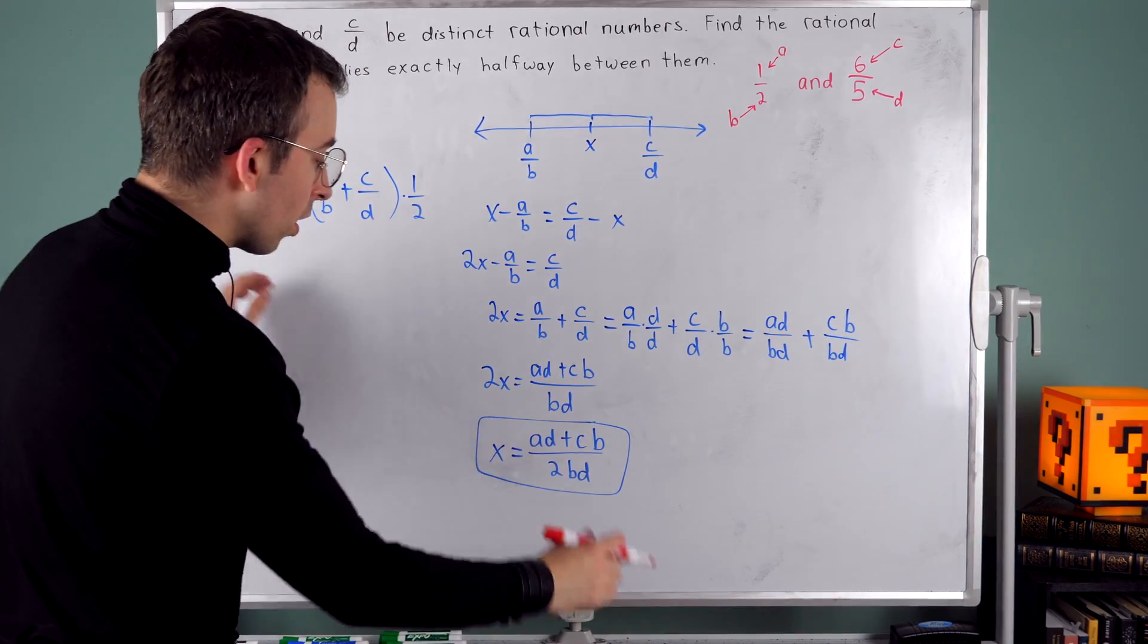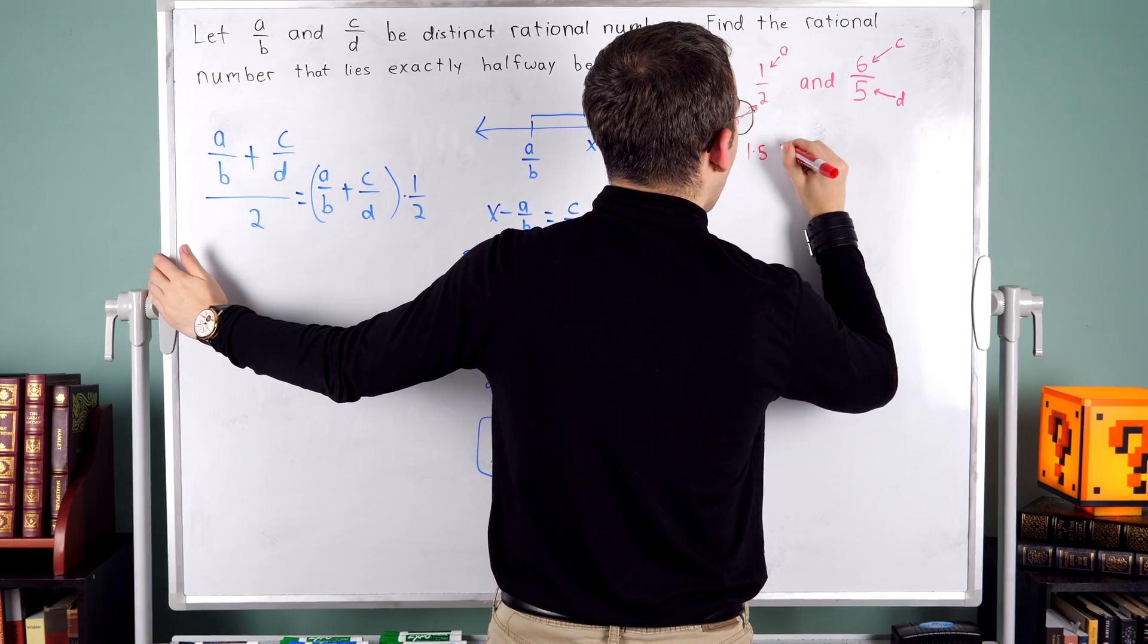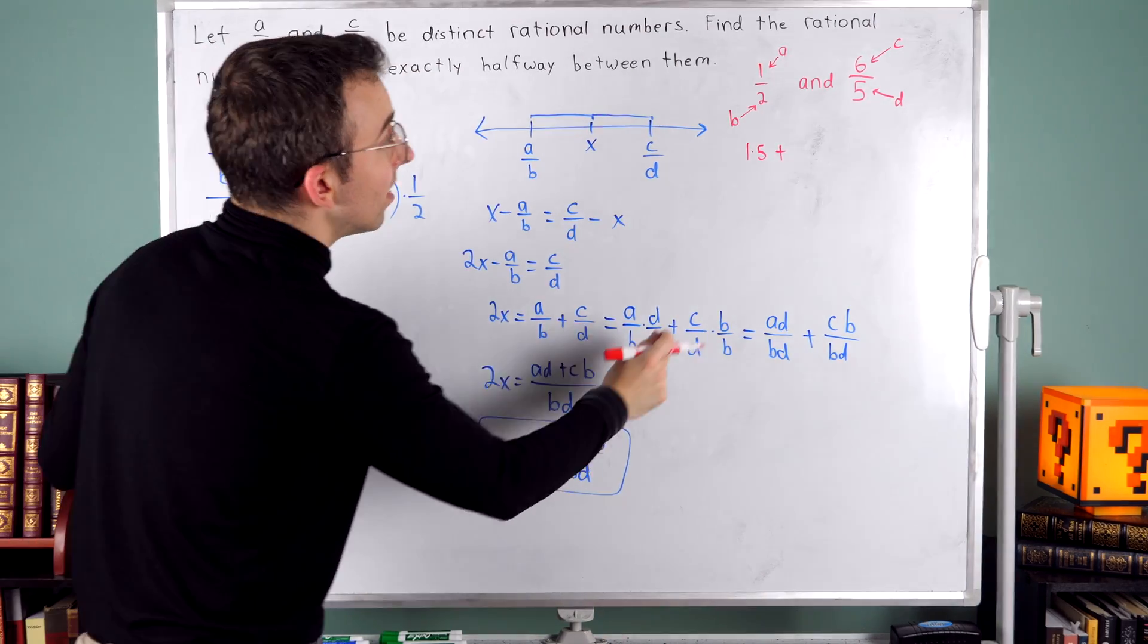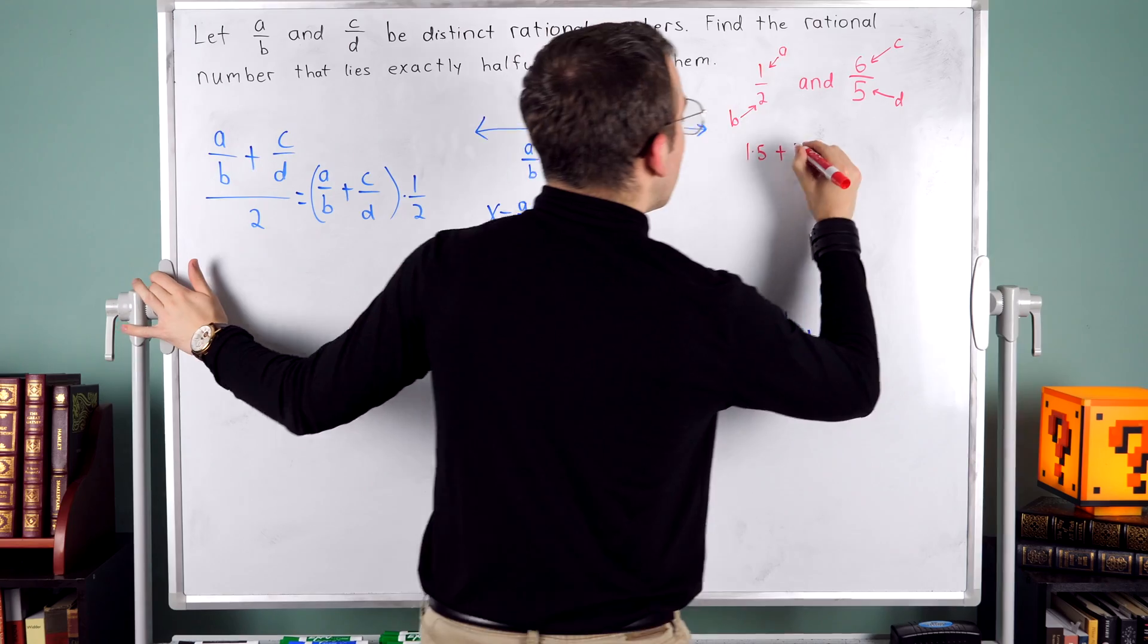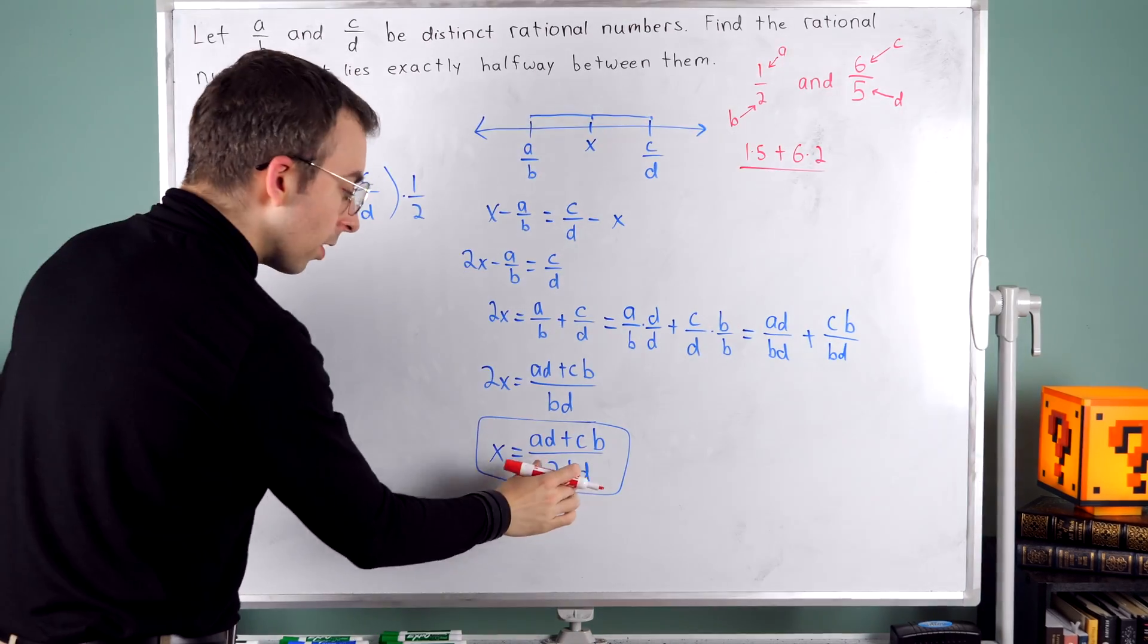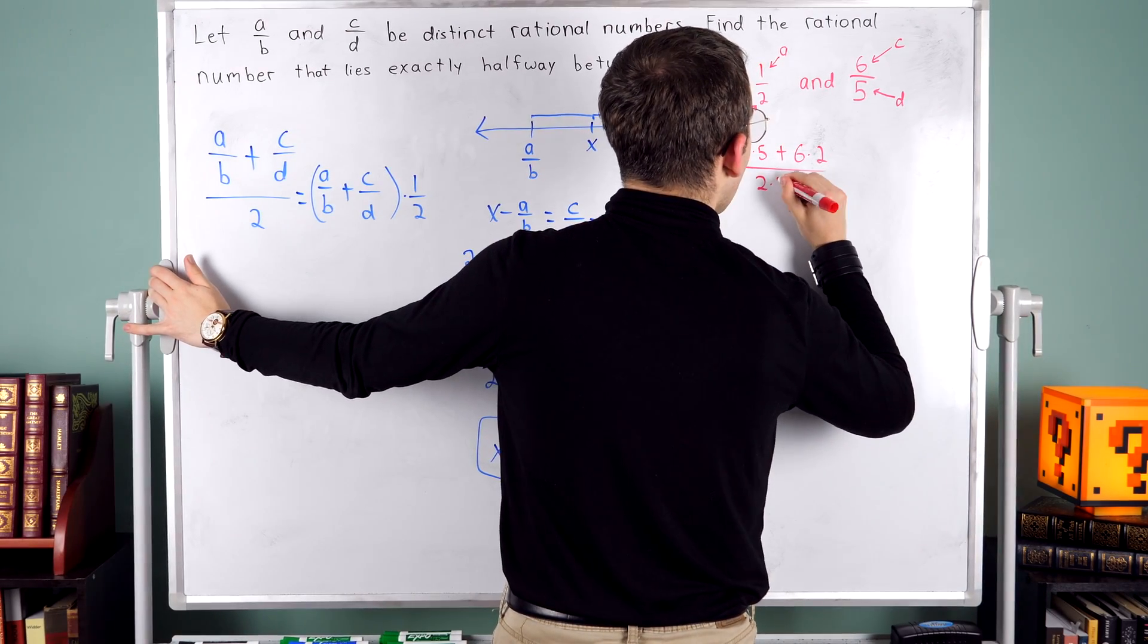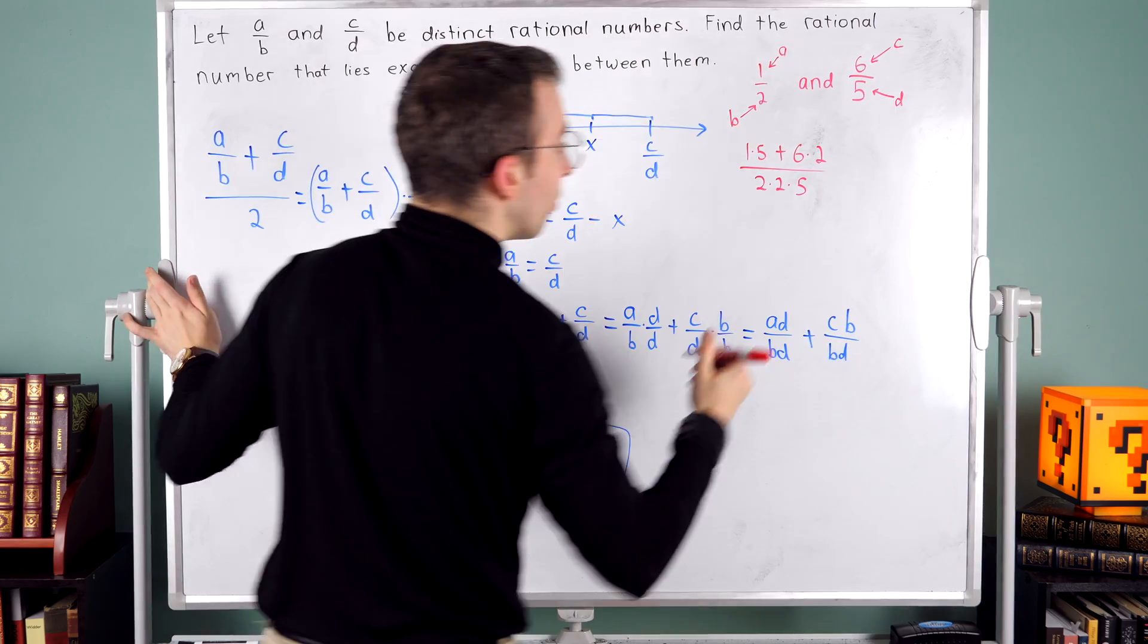In the numerator, we should have A times D. So that's one times five plus C times B, which is six times two. In the denominator, we just have two times B times D. So that's two times two times five.